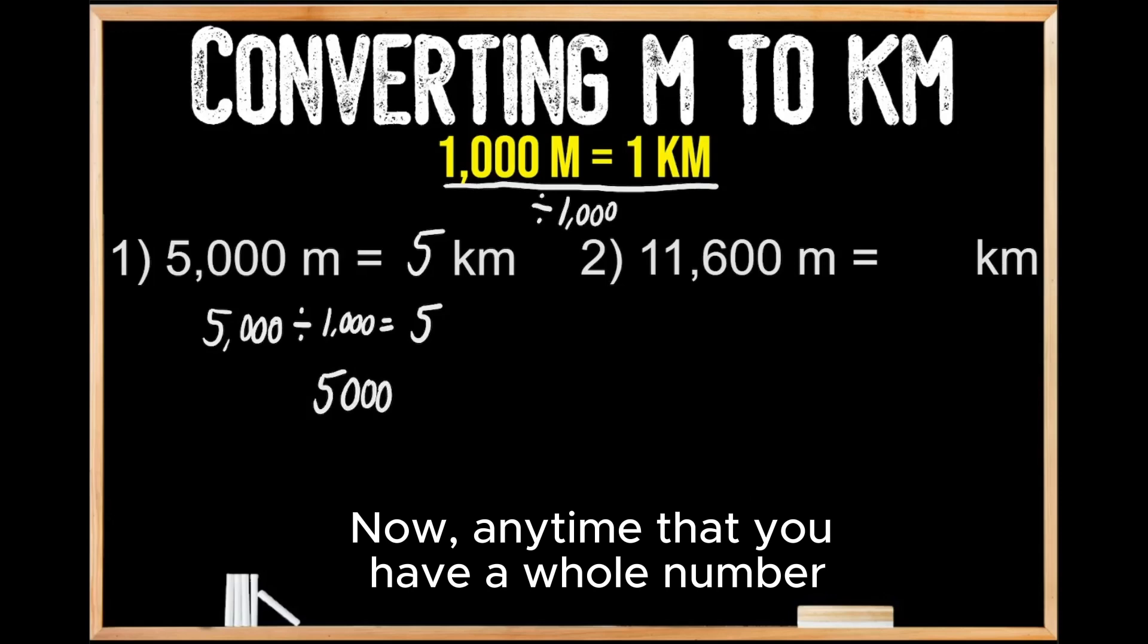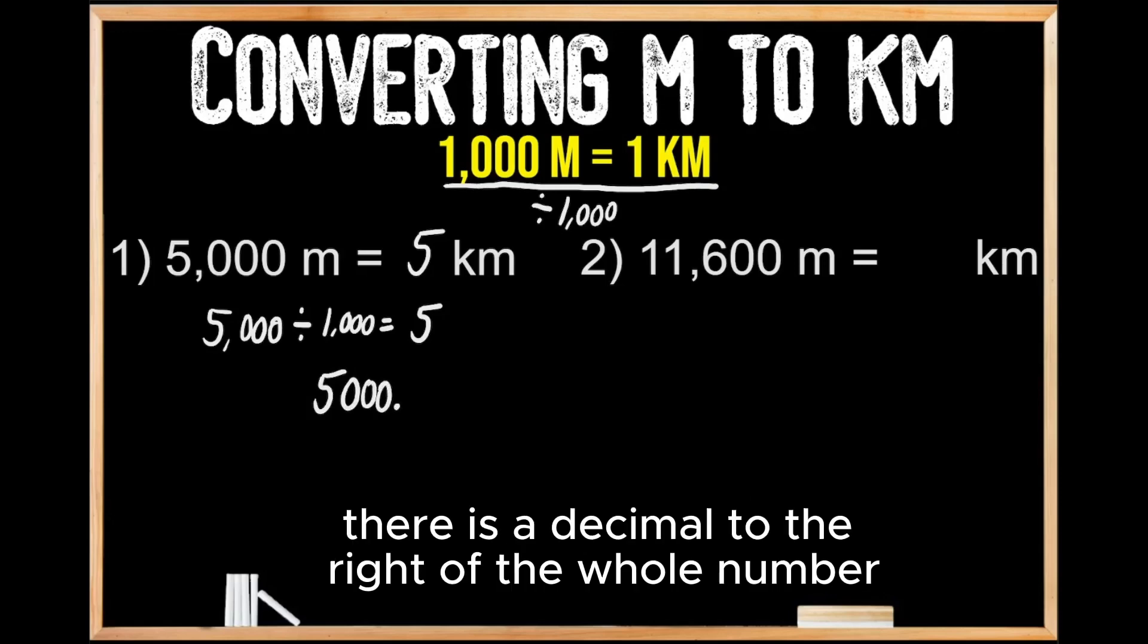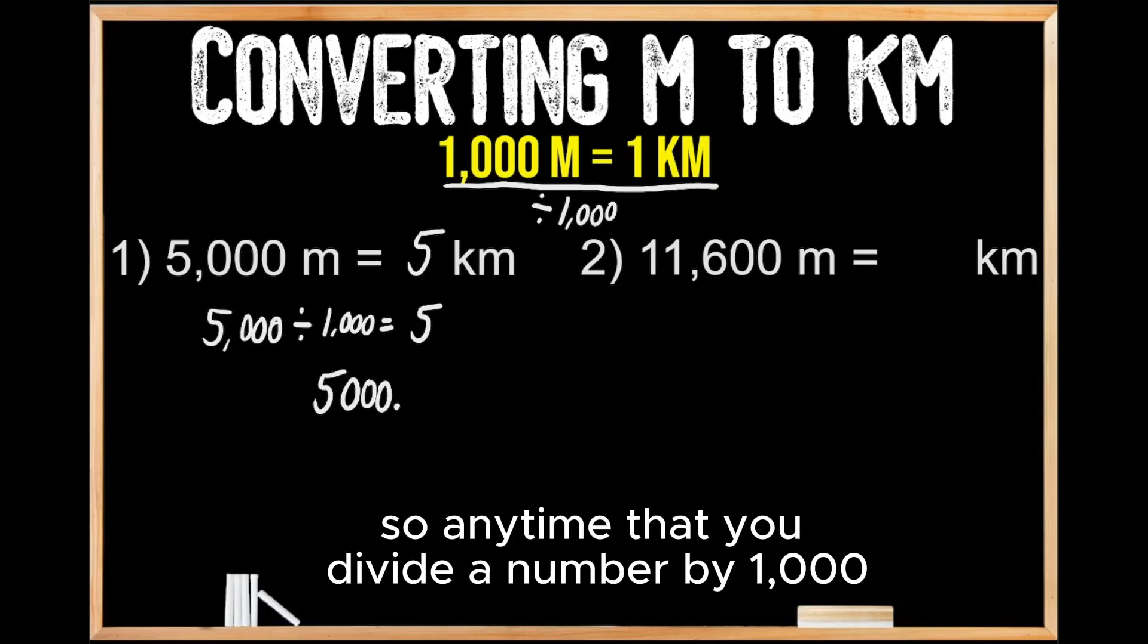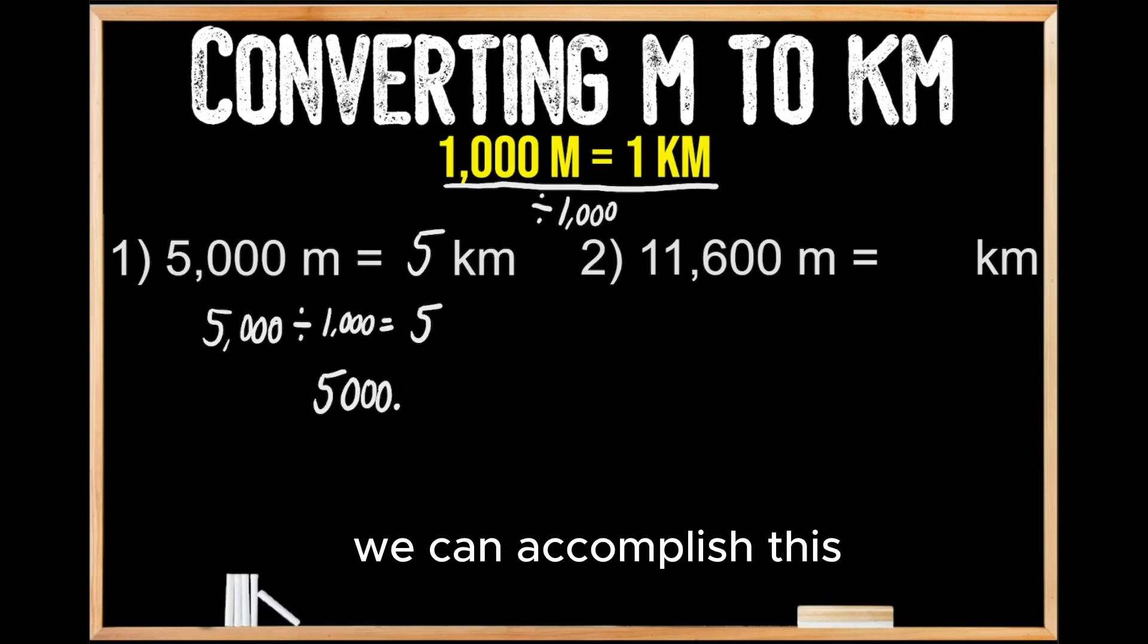Now, anytime you have a whole number, there is a decimal to the right of the whole number. We typically don't write it though. Here's where our little trick comes in. Anytime you divide a number by 1,000, we can accomplish this by simply shifting our decimal place three places to the left.